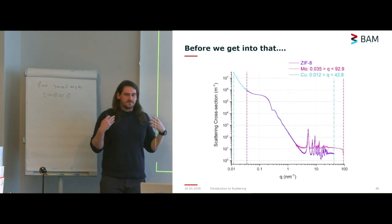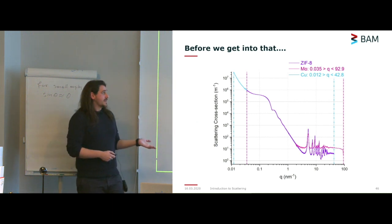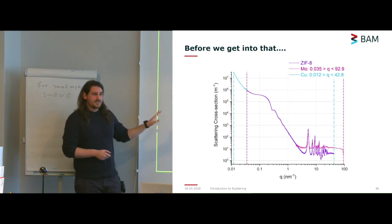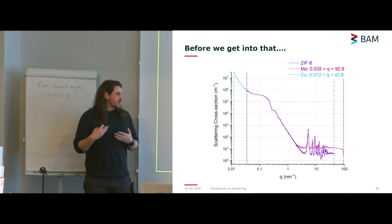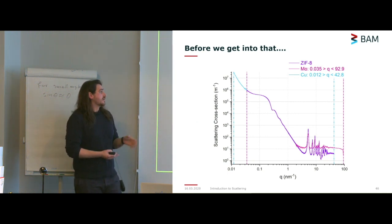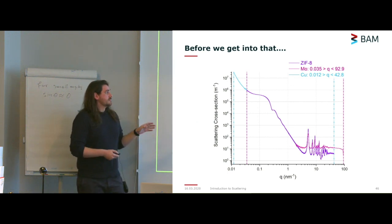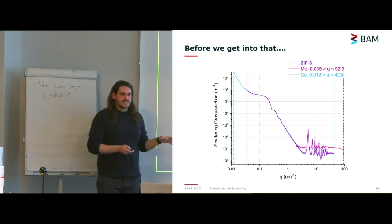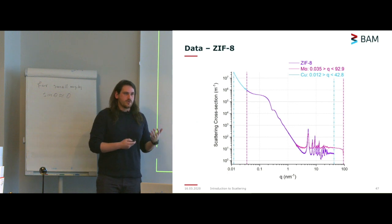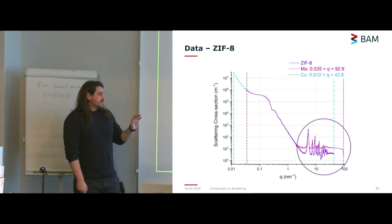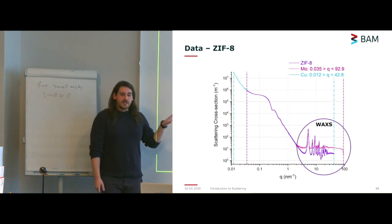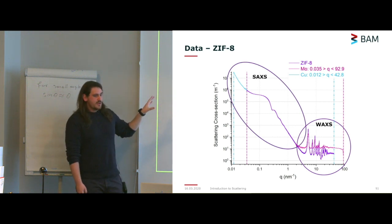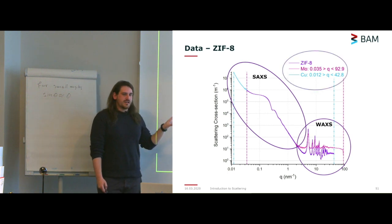Before we get into the equations themselves, we're going to start looking at things from more of a practical point of view. Here we have data from our machine — this is what you might get from SAXS and wide angle scattering data. You get a nice continuous curve where it all matches up. We're going to focus on different regions of this scattering pattern: the wide angle scattering, the SAXS region, and some finer details. We'll look at what is going on using different X-ray sources and why these things don't match up nicely.